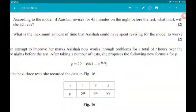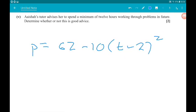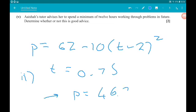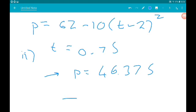Okay, part 2, 2 marks. According to the model, if Asha revises for 45 minutes on the night before the test, what mark will she achieve? That is just a substitution. 45 minutes is 3 quarters of an hour. So we're substituting in t equals 0.75. That should lead us to a value. P is 46.375. But can't get decimal marks. So P will be 46.